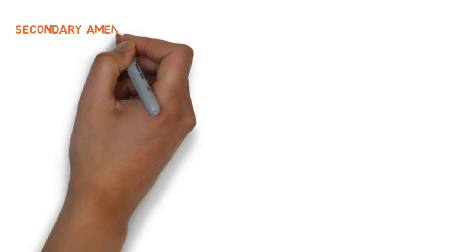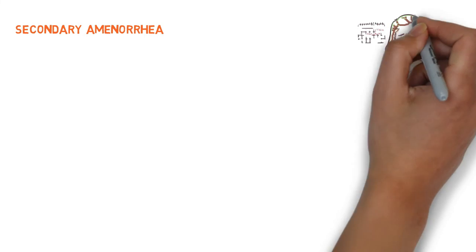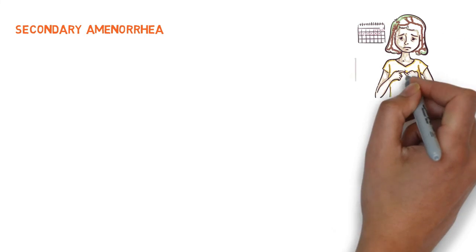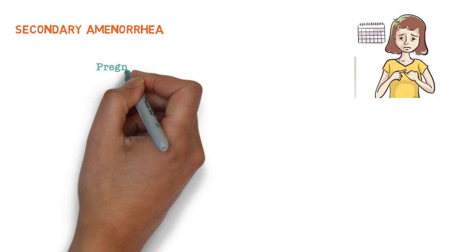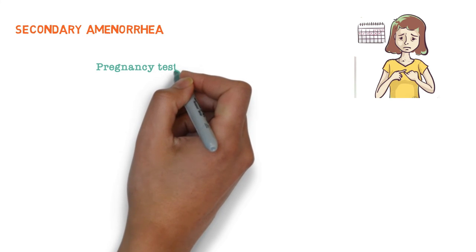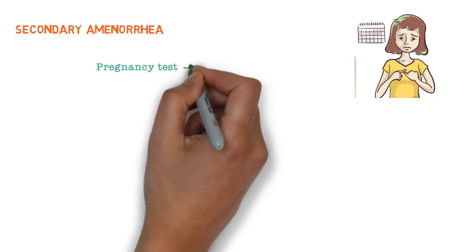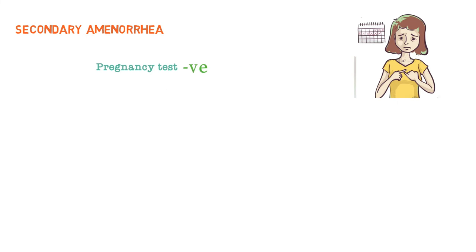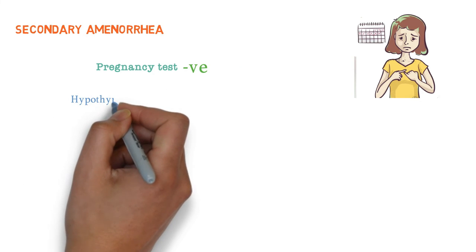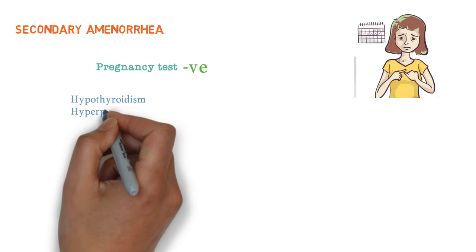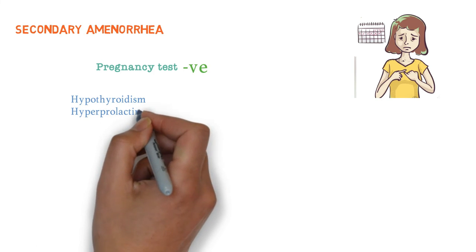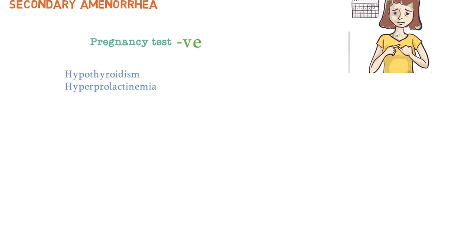Now let's talk about Secondary Amenorrhea, which is defined as missed periods for three cycles or three months. After a negative pregnancy test, we check TSH. Elevated TSH may indicate hypothyroidism, or there may be hyperprolactinemia — both of these hormonal changes can cause secondary amenorrhea.